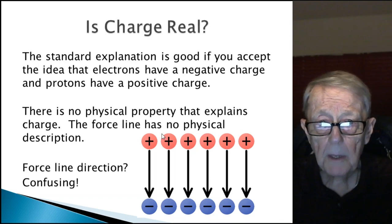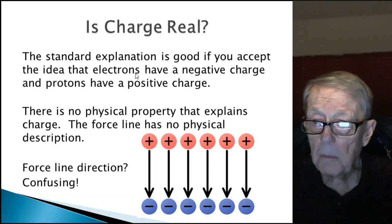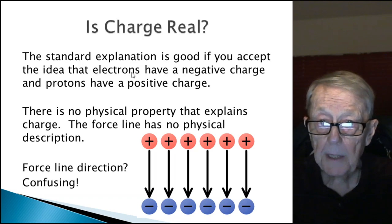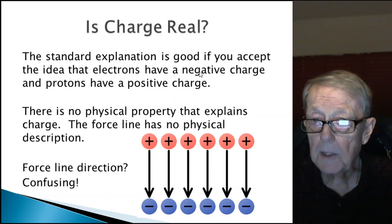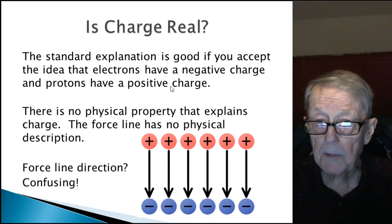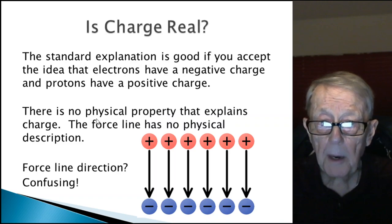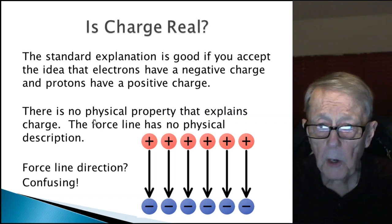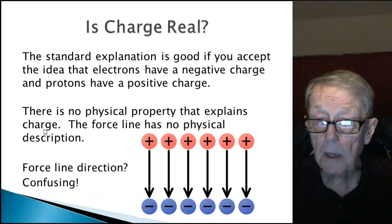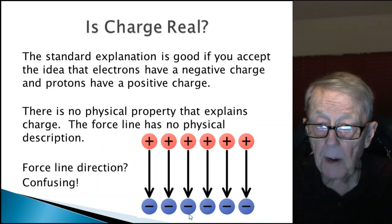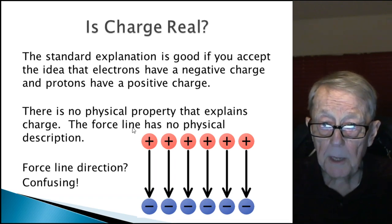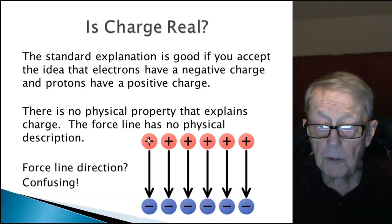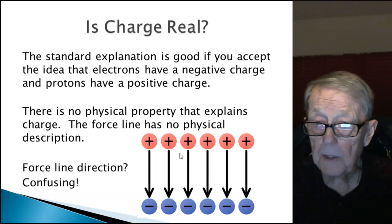I've talked about this many times: is charge real? Let me first comment about that standard explanation. That explanation is good if you accept the idea that electrons have a negative charge and protons have a positive charge. In the TPM model, I find no physical property that explains charge. Why electrons are negative and why protons are positive. No physical property that describes that, and the force line that goes from plus to minus has no physical description.